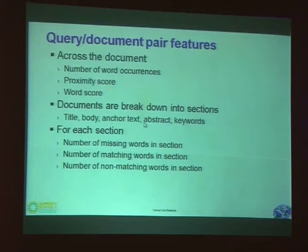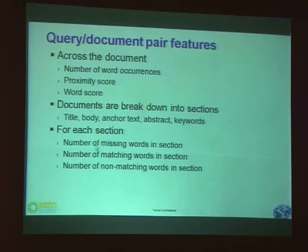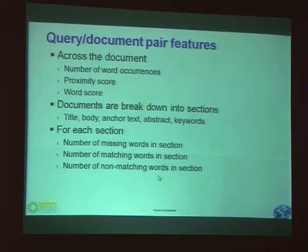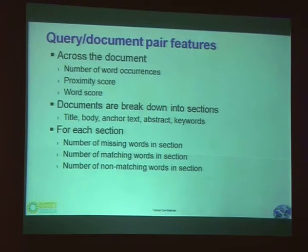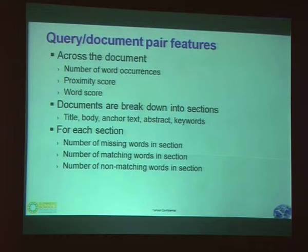It provides different types of signals. For each section, we compute the number of missing words, matching words, non-matching words, etc. Generally speaking, this is all about different kinds of proximity. Given a query, we want the similarity or proximity between the query and the text on the page to be as close as possible.